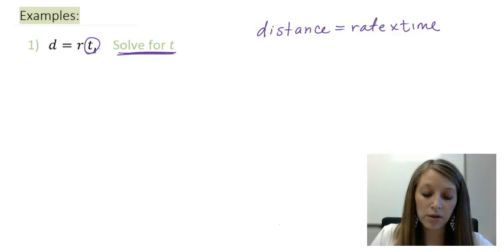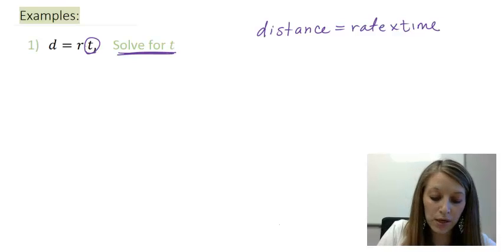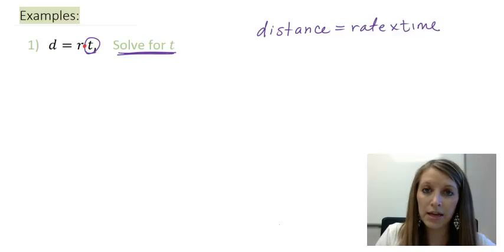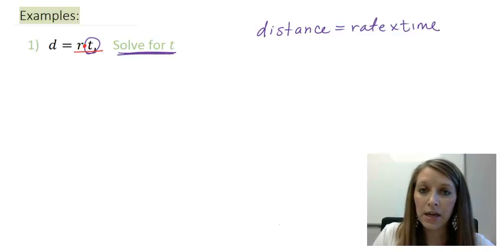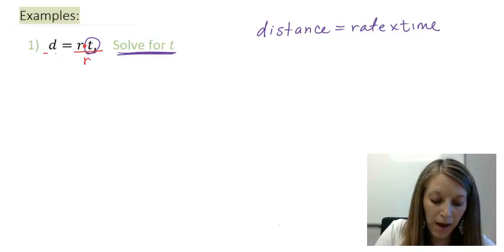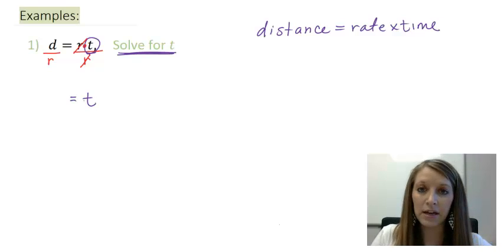Well, the way that we do this is we isolate our t variable. The operation that's happening between r and t is multiplication. So our opposite operation is to divide by the thing that's bothering t. So in this case, I divide by r. So my r's cancel out on the right and that leaves me with my time isolated.